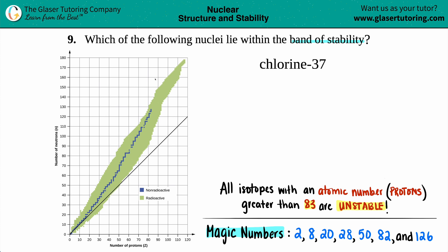There are a ton of isotopes that are not in the band of stability. There are only a select few that are stable. Let's figure out if chlorine-37 is.